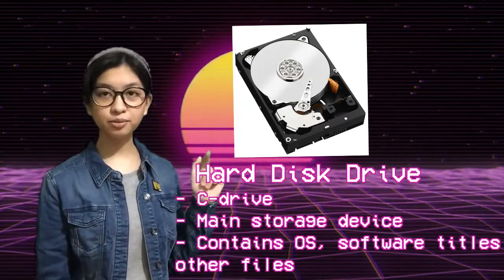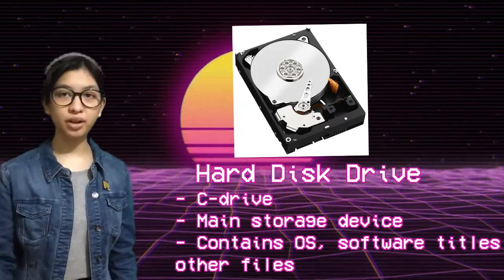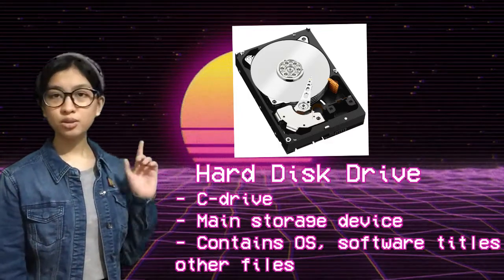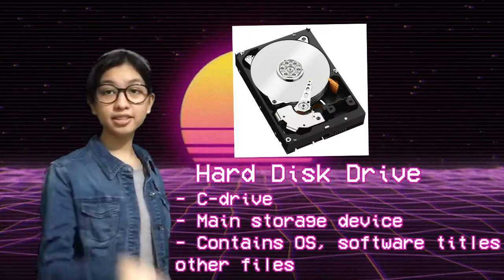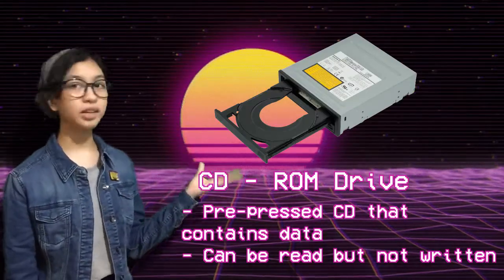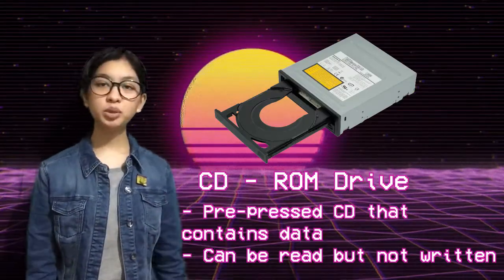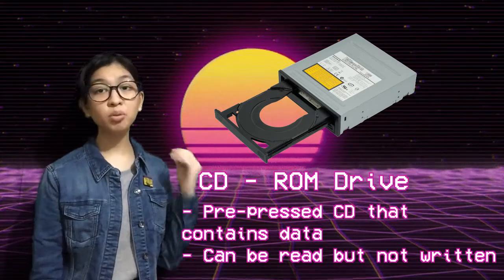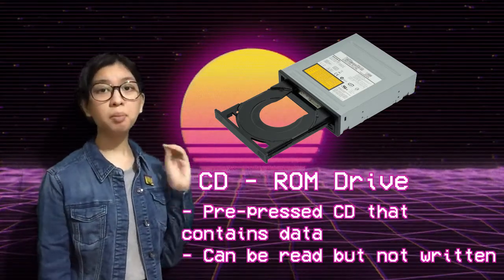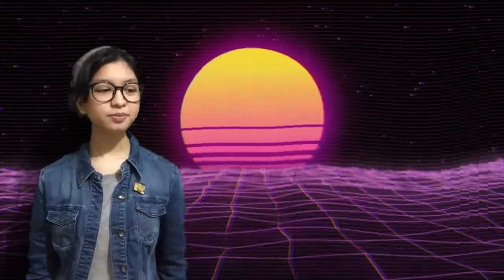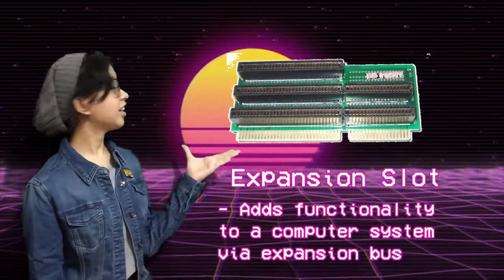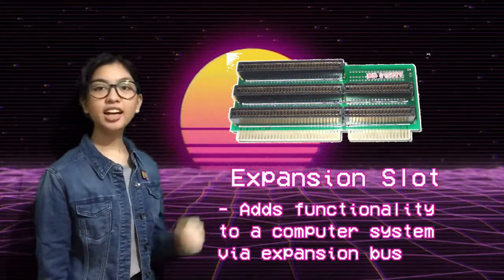The hard disk drive, also known as the C drive, is the main storage device. It converts OS software titles and other files. The CD-ROM drive is a pre-processed CD that contains data; it can only be read but not written.